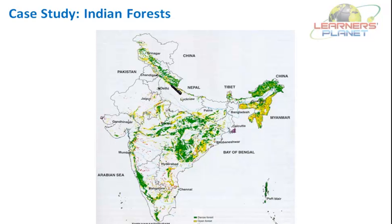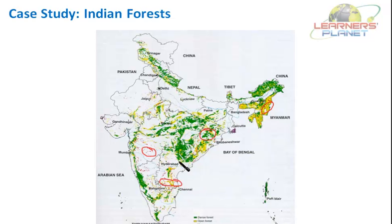Here you can see the map showing the states of India. The dark green color shows the dense forest, yellow color shows the open forest, the violet and purple ones show the presence of mangroves, the red one shows the presence of scrub trees, and the blue ones are the water bodies. Basically, it is the map showing which parts of India have dense forests, open forests, mangroves, scrub, and water bodies.